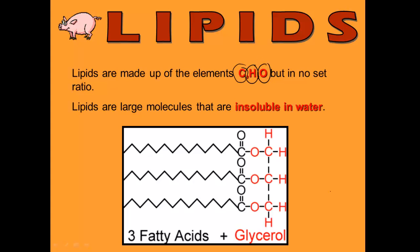But unlike carbohydrates, they are not in any set ratio. If you remember, carbs are in a one to two to one ratio. Lipids don't have any ratio. So if you see a molecule and you're trying to figure out if it's a lipid or a carb, count the carbons, hydrogens, and oxygens. If they're in a one to two to one ratio, then you're probably dealing with a carb. If they're not, and there's way more carbons than there are anything else, you're probably dealing with a lipid.